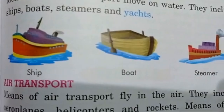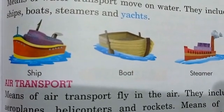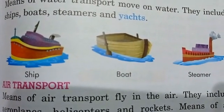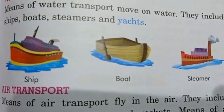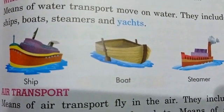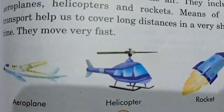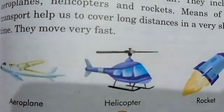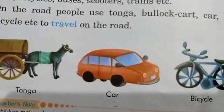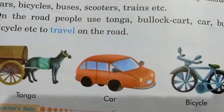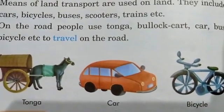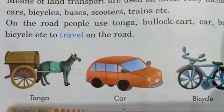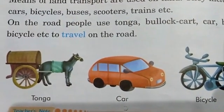Look at these — these are the air transport: aeroplane, helicopter, rocket. These are the water transport: ship, boat, steamer — they move on water. And these are a few examples of land transport that move on the land.